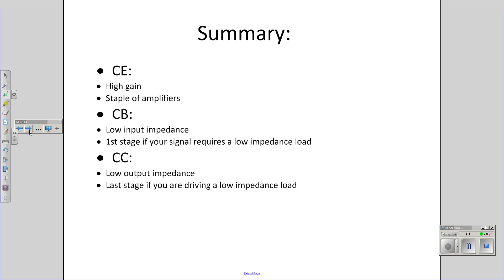In summary, we've got three amplifiers. The common emitter amplifier is used for high gain — that's the staple of amplifiers. In a multi-stage amplifier, they're usually common emitter amplifiers cascaded, each one giving you gain. Common base amplifiers are used as the first stage if you have a sensor that requires a low input impedance and can't drive a large impedance. Common collector amplifier is used at the last stage — if you're driving a load that has a low impedance, say an 8 ohm speaker, use a common collector amplifier at the last stage.